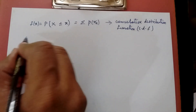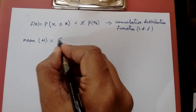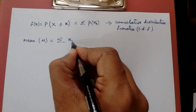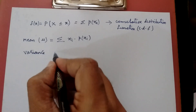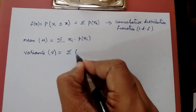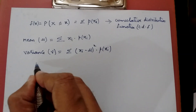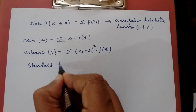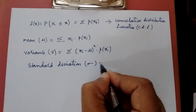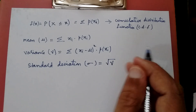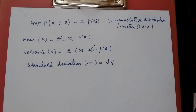The basic formulas required to solve problems are: Mean μ = summation of xi · P(xi). Variance V = summation of (xi − μ)² · P(xi). Standard deviation σ = square root of the variance. These are the basic formulas we will use when solving problems. In the next video, we will take a few problems involving random variables. Thank you.